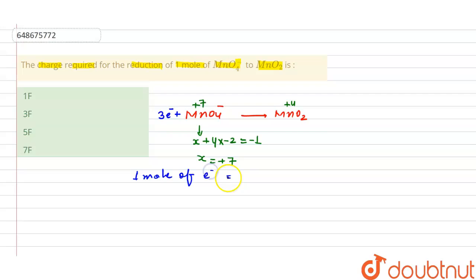So here, for one mole of MnO4-, we will require 3 moles of electrons. So in 3 moles of electron, we will have 3 Faraday of charge.